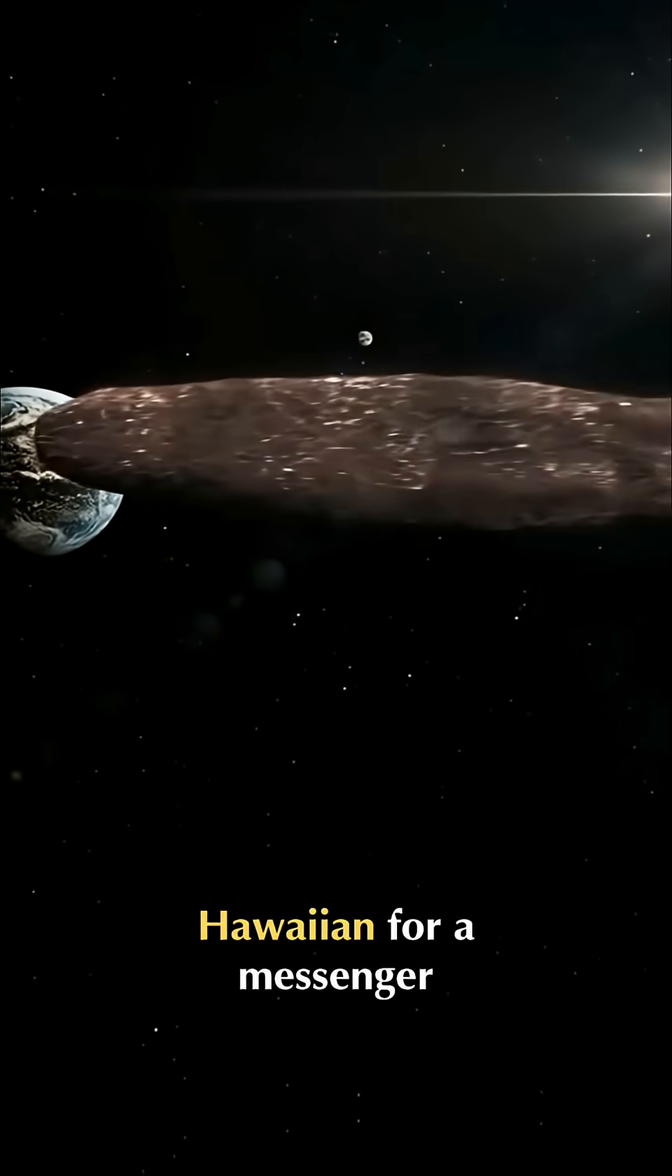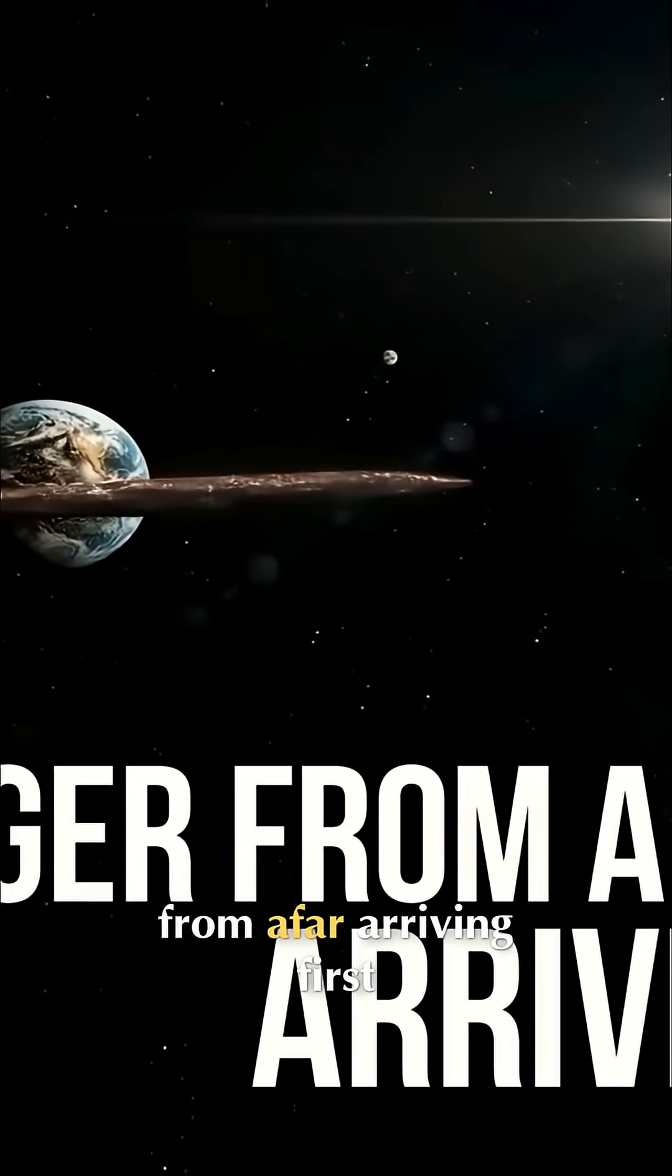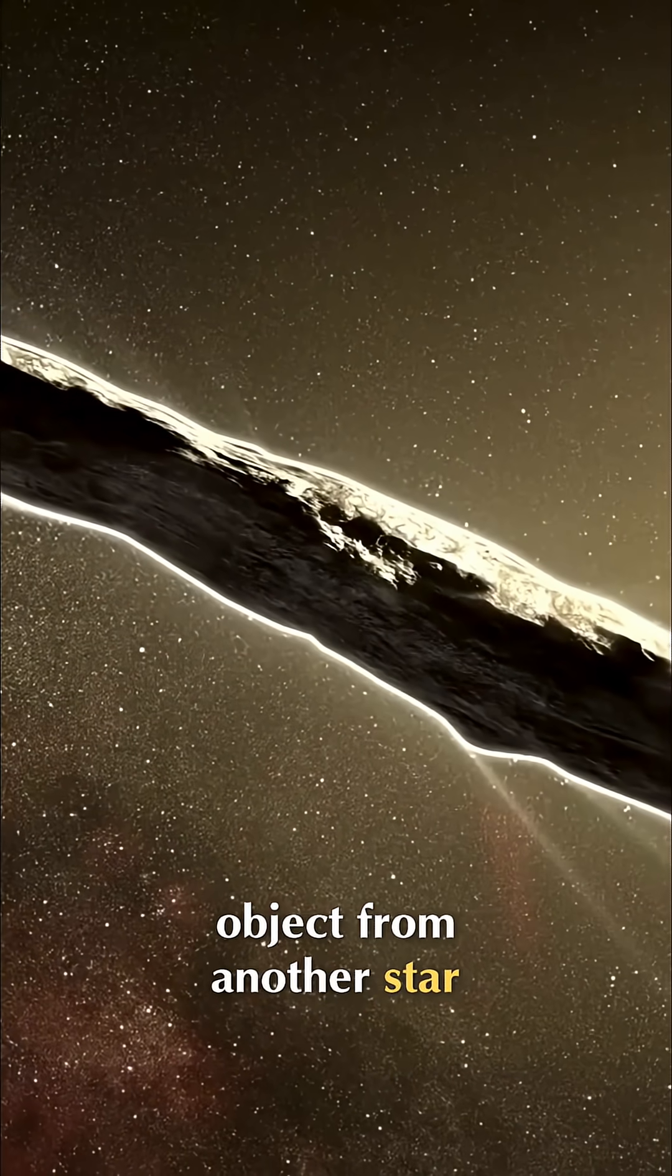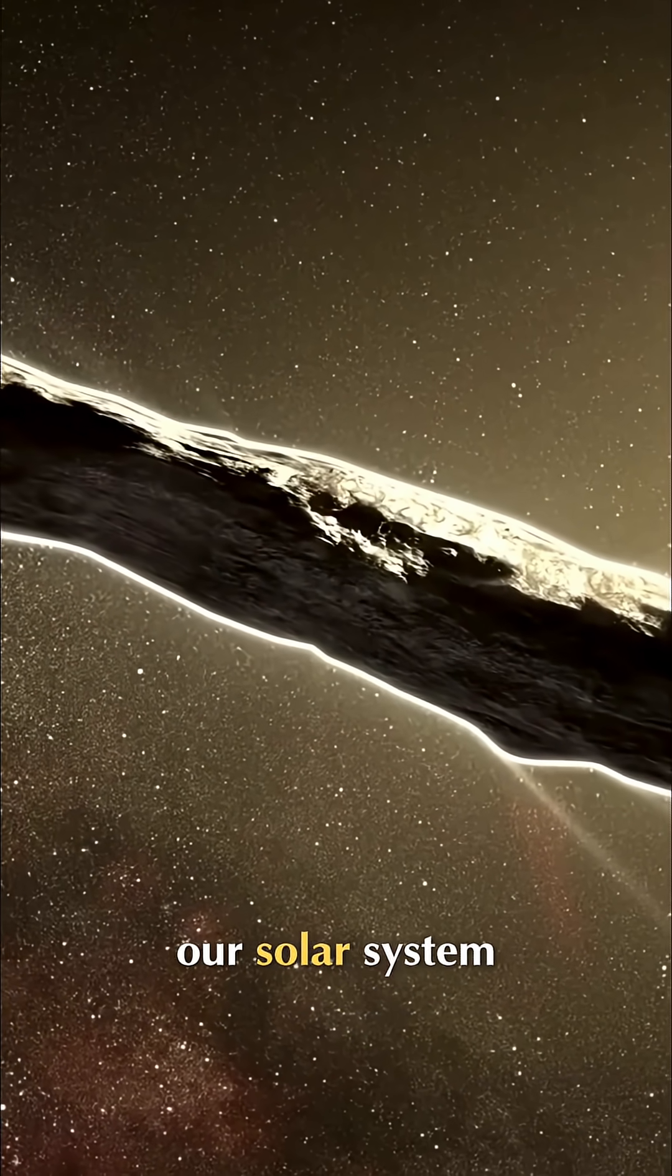Oumuamua, Hawaiian for 'a messenger from afar arriving first,' was the first known object from another star system to pass through our solar system—basically, the first interstellar guest.